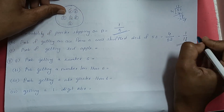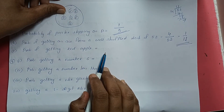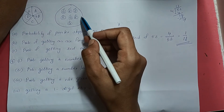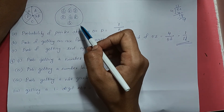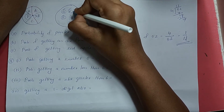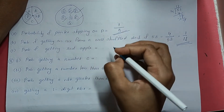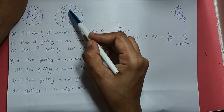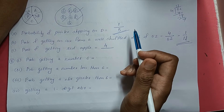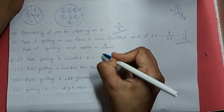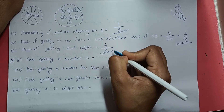1 by 13 is the probability of getting an ace from a well shuffled deck of 52 cards. Next, probability of getting a red apple. From the figure, the number of red apples is 1, 2, 3, 4 — so 4 red apples — divided by total number of apples which is 7. So the answer is 4 by 7.